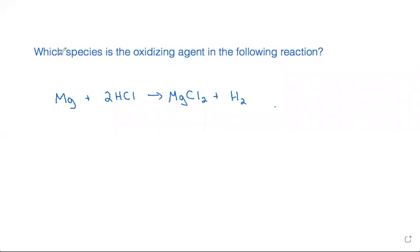In this problem it's asking which species is the oxidizing agent in the following reaction. The first thing that I would do is find the oxidation number of each element or each ion.